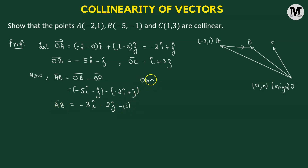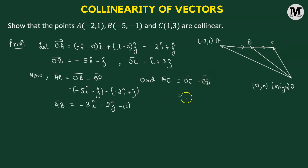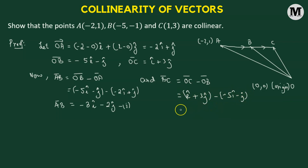Similarly, we can find vector BC, formed by joining B and C with a vector going from B to C. So BC vector equals OC vector minus OB vector. OC vector is i-cap plus three j-cap, and we subtract OB vector, which is negative five i-cap minus j-cap. That gives us six i-cap plus four j-cap. We call this equation two.